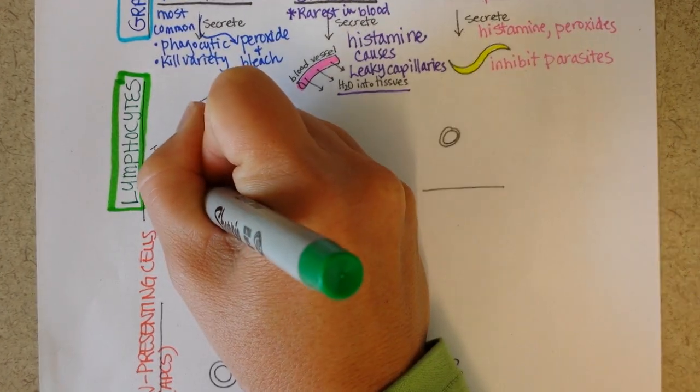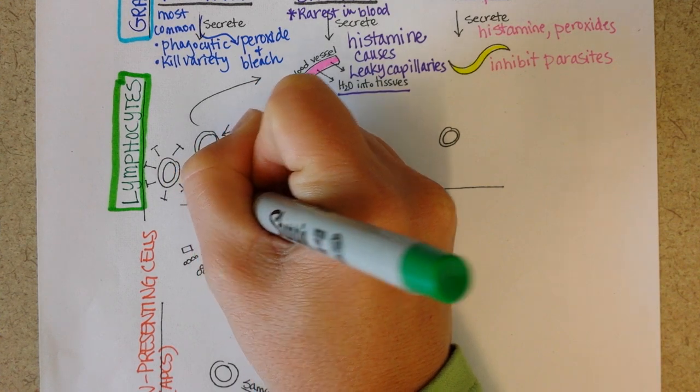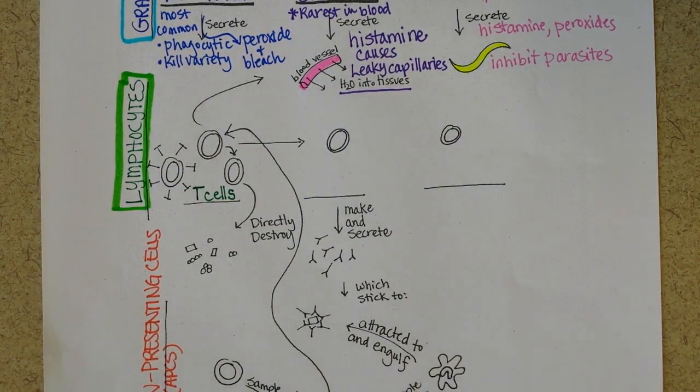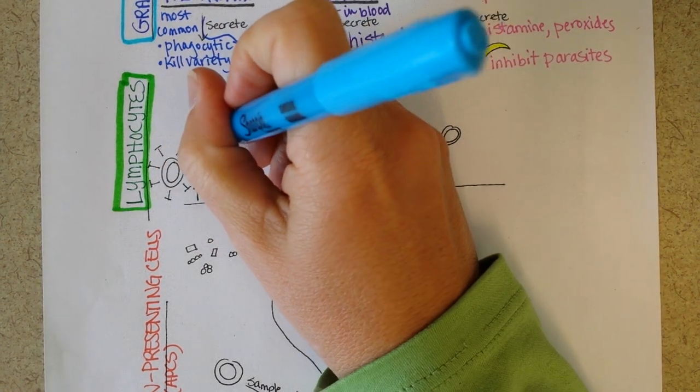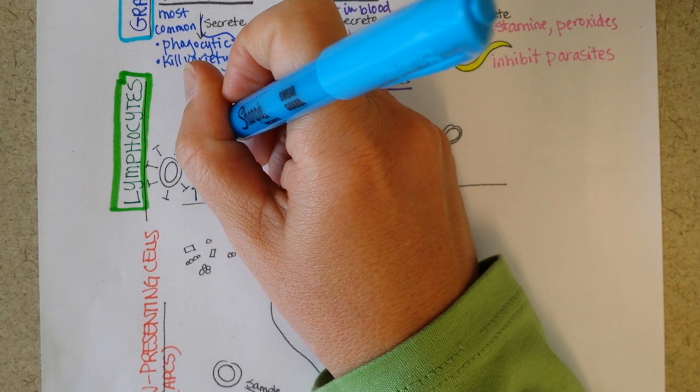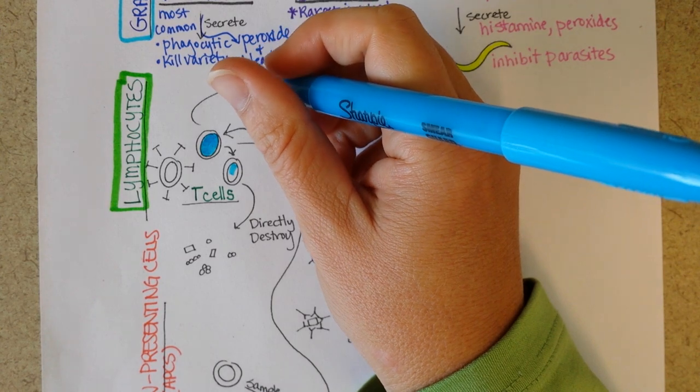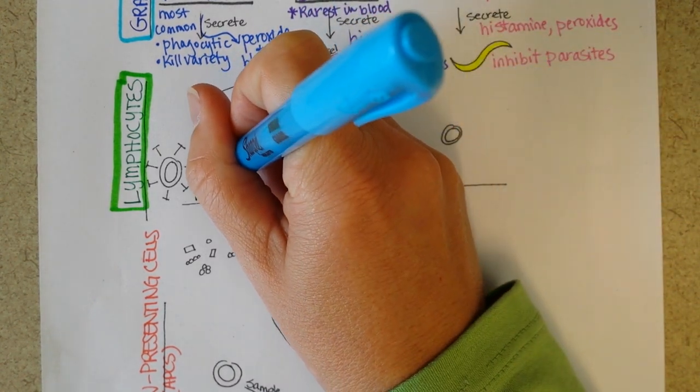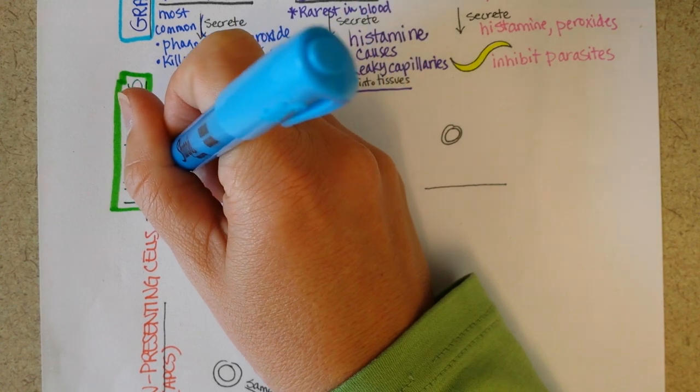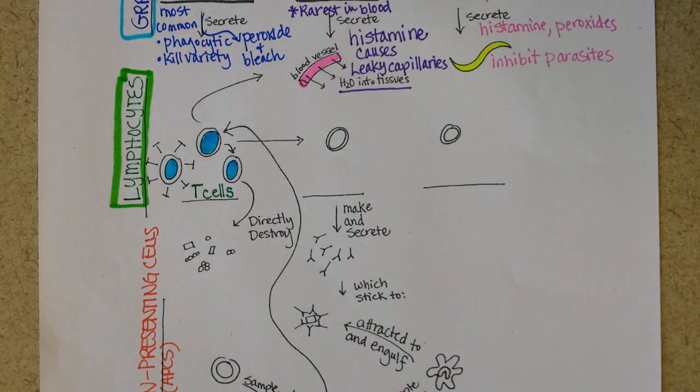So the first kind that I'm going to talk to you about are T cells. These are kind of a plain looking cell. We'll go ahead and color the nucleus here. And there are different kinds of T cells.